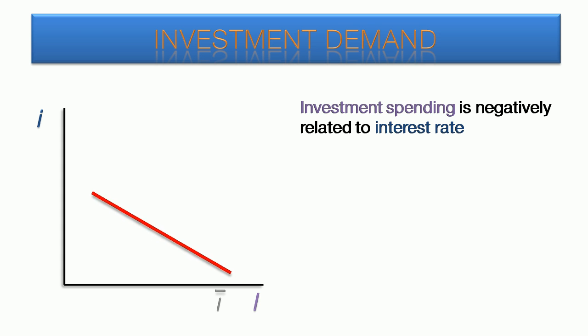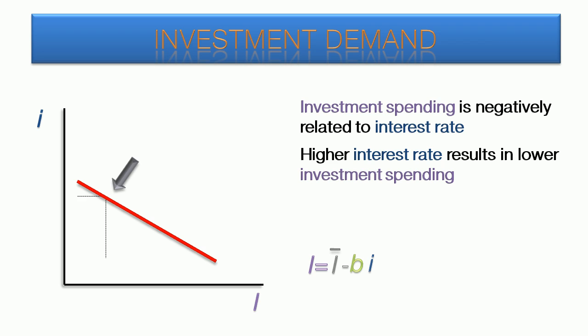Exogenous investment determines the initial level of investment. A higher interest rate results in lower investment spending because firms reduce their investment spending to avoid higher interest payments. A lower interest rate means that firms can increase their capital spending and pay relatively low interest.